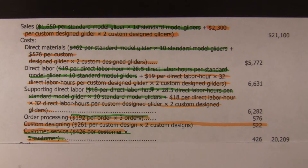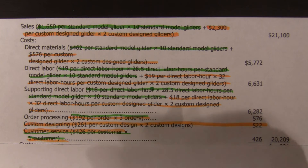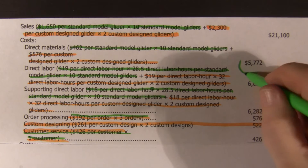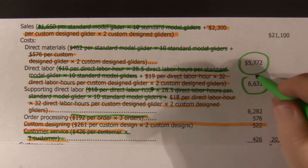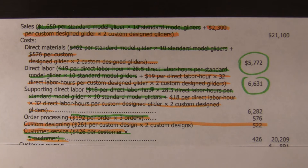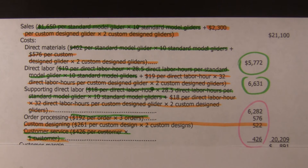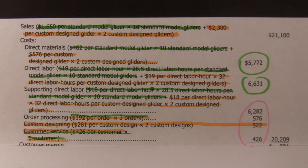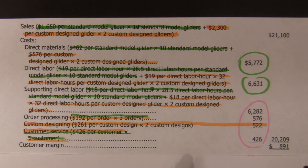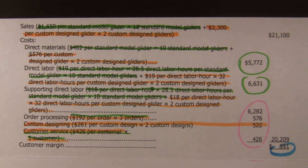That gives us the cost for the overhead. The total cost includes not only the direct material and the direct labor, it also includes all of the overhead, which we're applying using activity-based costing techniques to come up with a total cost of production of $20,209. When all told, this customer, when we've applied the overhead, gives us a margin of $891.